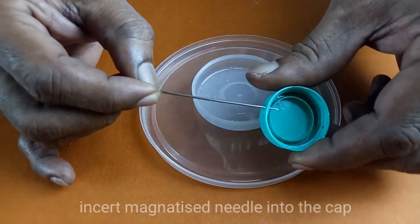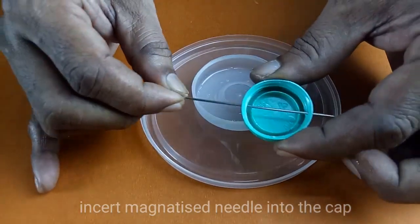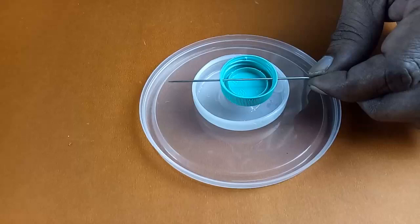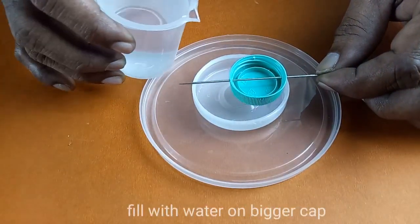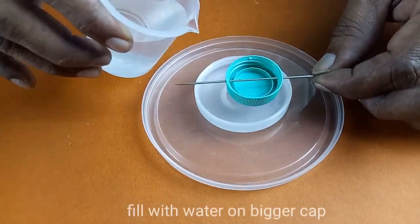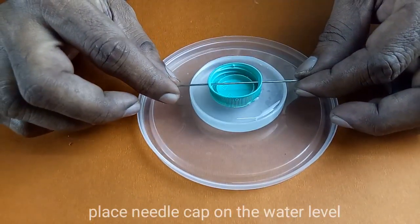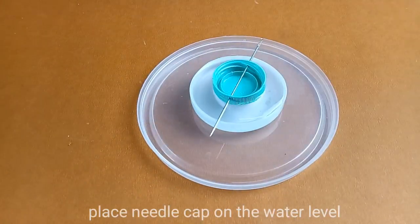Insert magnetized needle into the cap. Fill with water in bigger cap. Place needle cap on the water level.